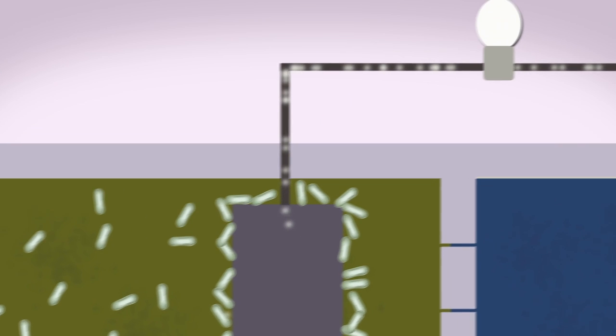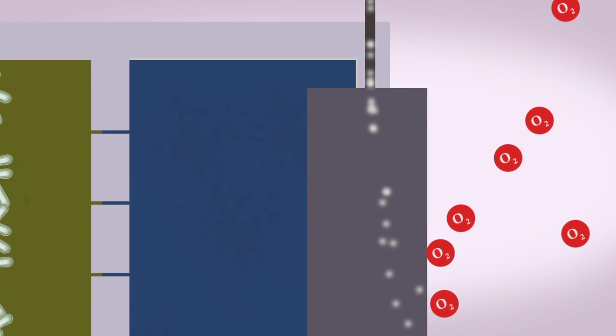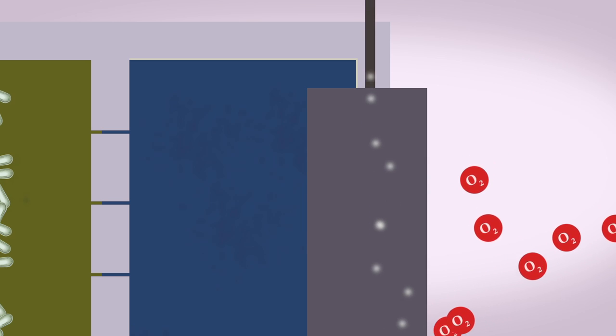The electrons flow through a circuit so we extract that electrical current as electrical power. To complete the circuit, the electrons end up on the other side of the tube and combine with oxygen.